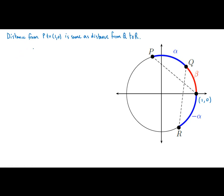We'll also use the distance formula: the square root of (x₂ − x₁)² + (y₂ − y₁)². That's how you get the distance between two points, between (x₁, y₁) and (x₂, y₂).